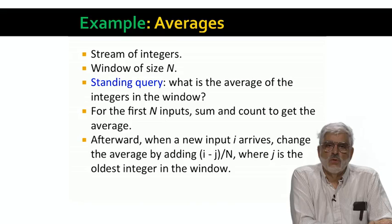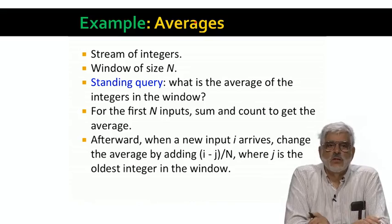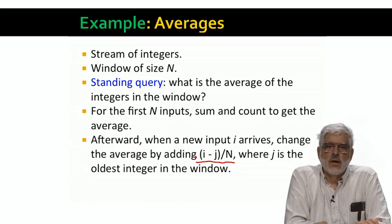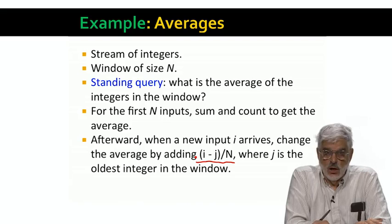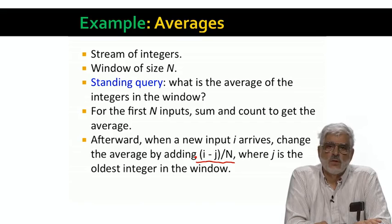Now, suppose we have our window full and it consists of the most recent N elements. We also store the average of these elements. That average is in the local storage, but it's not part of the window. Suppose a new element, I, arrives. The oldest element, J, in the window, will fall out of the window. Thus, the change in the average is (I minus J), all divided by N. I over N accounts for the contribution I makes to the average. And minus J over N accounts for the fact that J no longer contributes to the average. The important point is that, in this manner, we can answer the query. What is the average of the elements in the window? Doing only a small fixed number of arithmetic steps with each arrival on the stream.